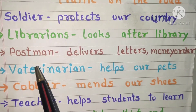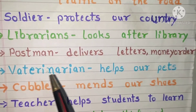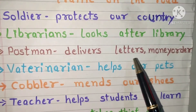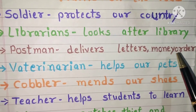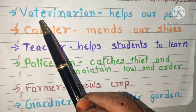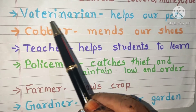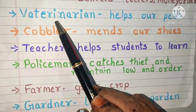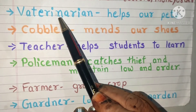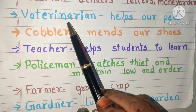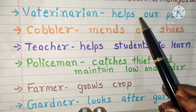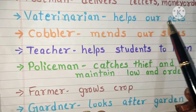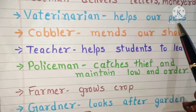Postman delivers letters, money orders, etc. Veterinarian — they are the doctors who take care of and help our pets.